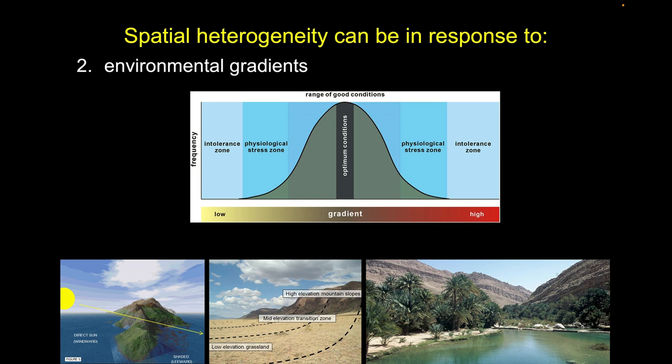As we move off that peak, we get into areas where the organism can live, but maybe not as ideally. All organisms have a wide number of dimensions of these environmental gradients, and these gradients are being set up all the time — for example, from sunlight, which is influenced by the aspect of the mountain or hillside.